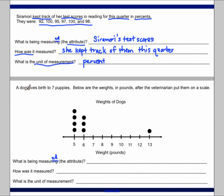Let's move on to the next problem. It says a dog gives birth to seven puppies. Below are the weights in pounds after the veterinarian put them on a scale. We have our title, Weights of the Dogs, and there are 1, 2, 3, 4, 5, 6, 7, 8 pieces of data here.